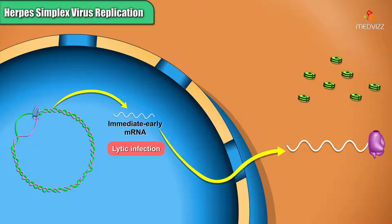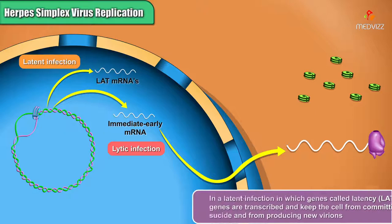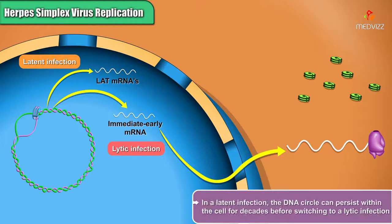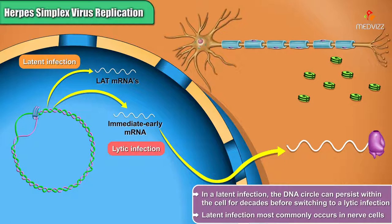However, the virus could have entered a pathway called a latent infection, in which genes called latency or LAT genes are transcribed and keep the cell from committing suicide and from producing new virions. In a latent infection, the DNA circle can persist within the cell for decades before switching to a lytic infection. Latent infection most commonly occurs in nerve cells.